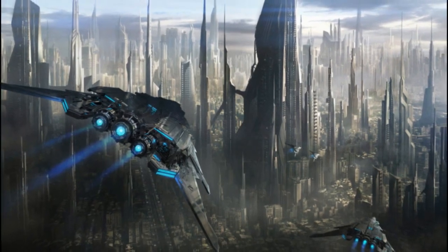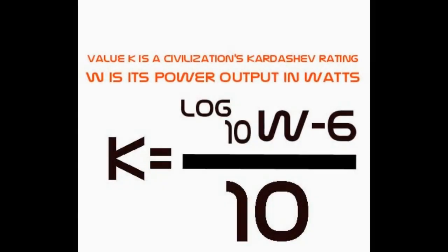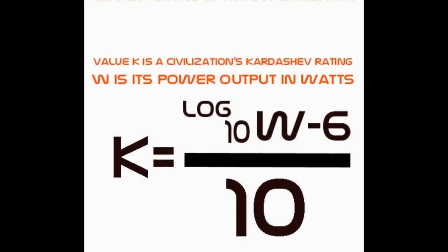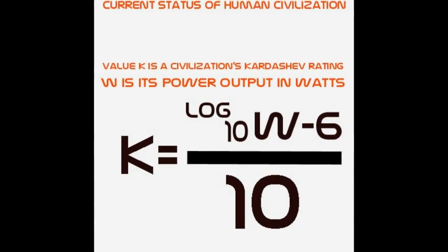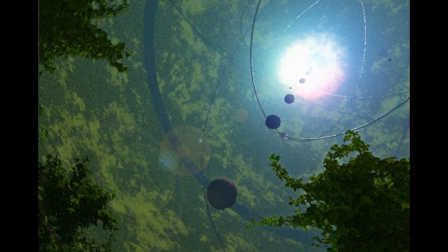Before we go any further, I must tell you that humanity is not even on this scale. Some scientists believe we are at 0.7, and it will take us roughly 100 to 200 years to reach Type 1.